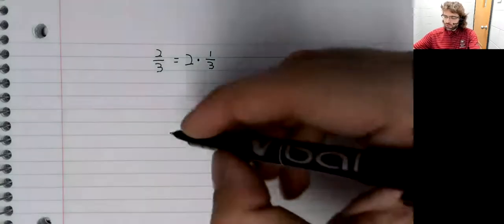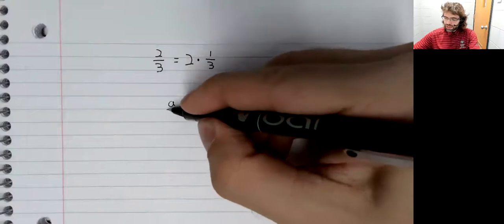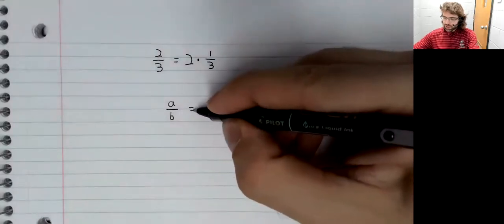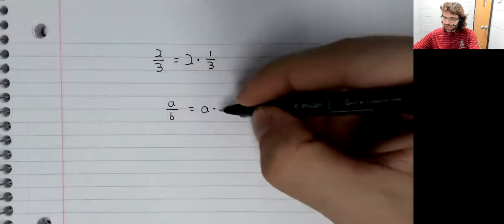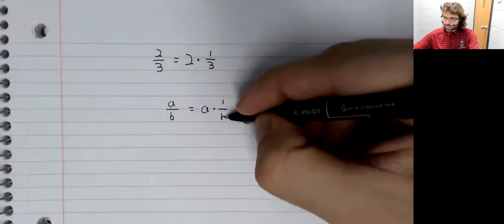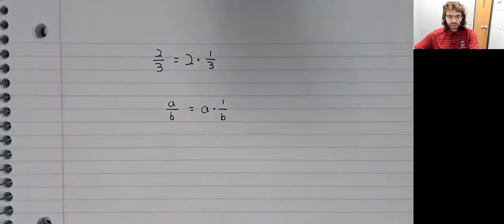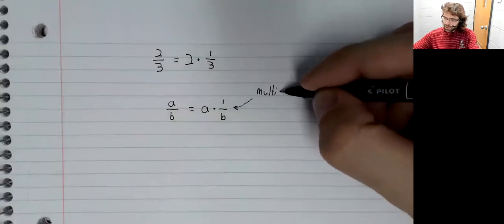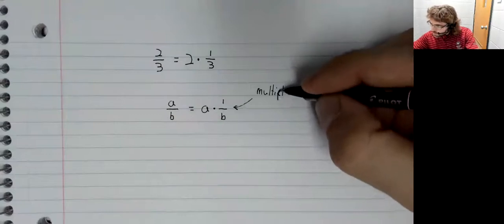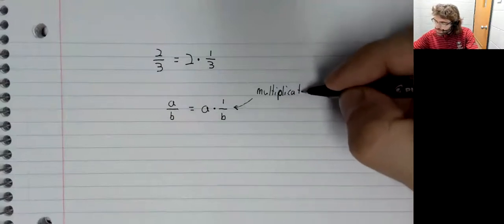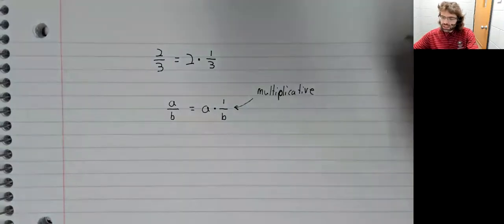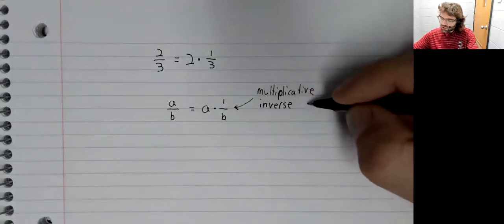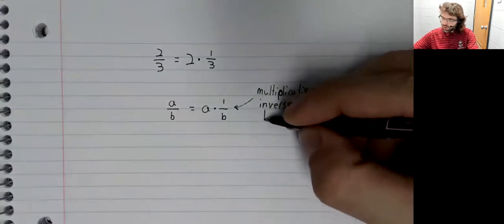In general, if you have A divided by B, you can think of that as A times one divided by B, where one divided by B is the multiplicative inverse of B.